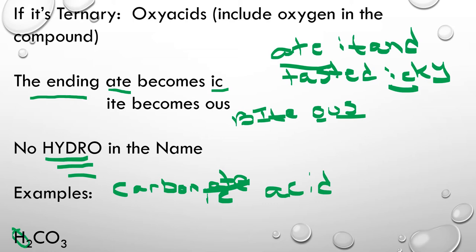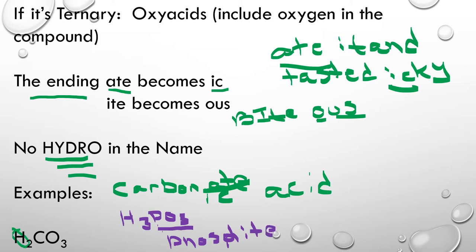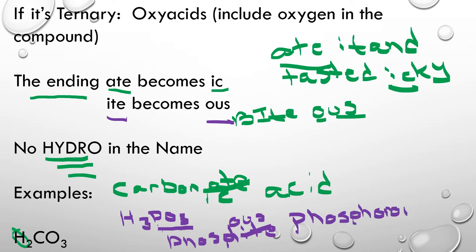Let's say we have H3PO3. We've identified this as non-binary — it's an oxy acid because we have a polyatomic in here, so we know we don't use the word hydro. We need to look at our polyatomic ion chart. It's phosphite. And we know -ite becomes -ous. Phosphite is a little irregular because we don't say 'phosphous acid' — we actually put back in the syllable and say phosphorous acid. That -ite changes to -ous.